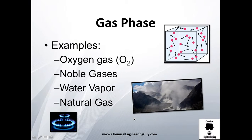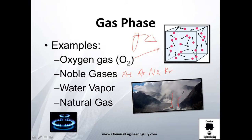Some examples of gases are oxygen gas, which can be found in tanks or oxygen masks; noble gases such as xenon, argon, neon, and krypton; water vapor such as from geysers; and natural gas, which is almost invisible to the naked eye but can be seen here being burned.